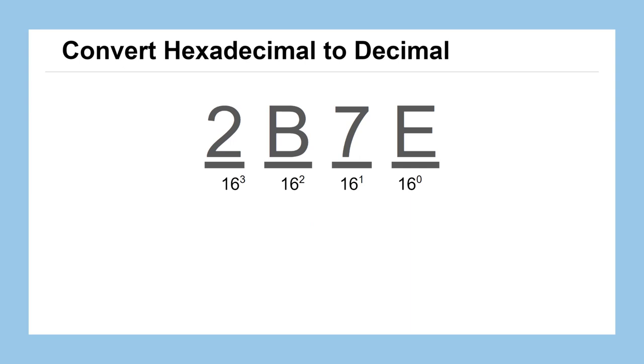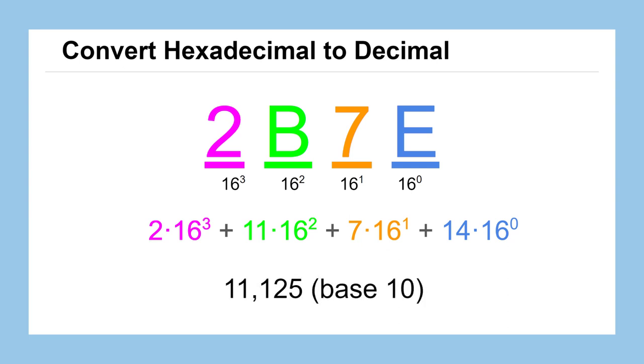We're going to do the same thing with hexadecimal. Here we have the number 2b7e. Let's go ahead and convert to decimal. So we'll have 2 times 16 cubed plus 11 times 16 squared. B is equivalent to 11 in a decimal system. It goes 0, 1, 2, 3, 4, 5, 6, 7, 8, 9, A, B. So b is 11, and then we'll have 7 times 16 to the first power, and then plus 14, e is the same thing as 14, times 16 to the zero power. Throw that all into a calculator of some sort, and you get 11,125 in our base 10 system.